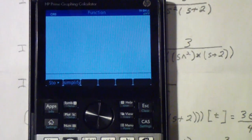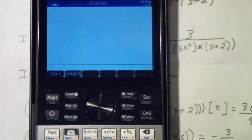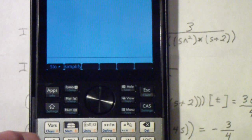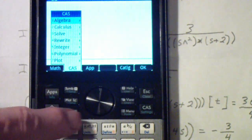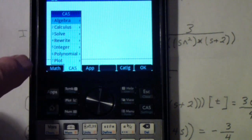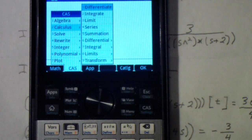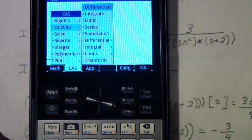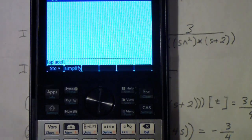Let me zoom in a little better here so you can see what I'm doing. You may recall that we go to the toolbox and make sure you're in CAS, and then you select Calculus which is 2, and then Transform which is 9, and then Laplace which is 1.